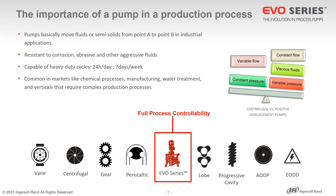This allows full control of a process. Here I show some examples of positive displacement pumps popular in the market. For applications that demand constant flow even as pressure changes and the ability to move viscous fluids, positive displacement pump technologies are normally chosen. Ingersoll Rand has a broad portfolio of positive displacement pump technologies covering almost any type of problem existing in industry. Each technology has its respective benefits, and I want to introduce a new positive displacement technology we call the only-one solution: the EVO series pump.